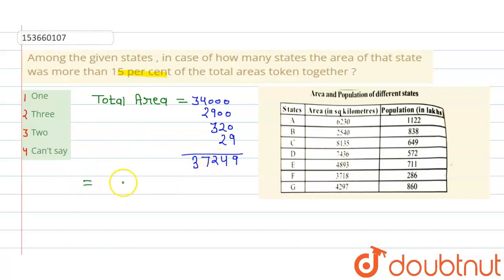Agar main itna ho jayega iska total population ka agar main 10 percent ki value nikalu toh yeh kitna ho jayega ek bata das se, toh yeh ho jayega 3724.9 itna area ho gaya. Agar mujhe 5 percent nikalna toh main iska aadha kar dunga, aadha karke kya ho jayega. Agar main total 15 percent jodta hoon, toh yeh total ho gaya 5587. Toh 5587 kilometer square area hai 15 percent.